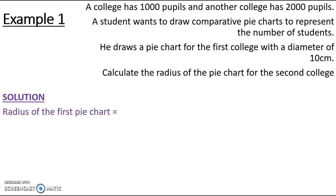Step 1: What is the radius of the pie chart he's already drawn? If I read through the information, they've told me that the first pie chart has a diameter of 10 centimeters. So hopefully we can remember that diameter is two lots of the radius. So the radius of the first college pie chart is 5 centimeters.